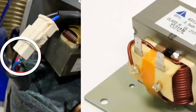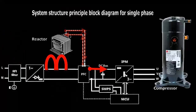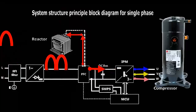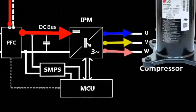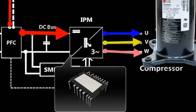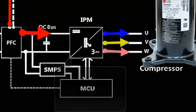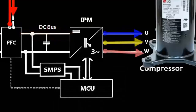Finally, to finish explaining the diagram, the stable current that comes out of the PFC circuit goes to the intelligent IPM circuit, or module, which is controlled by the main controller, and is responsible for feeding the three coils of the inverter compressor motor. In addition, the IPM electronic module is responsible for controlling the compressor speed, according to the signal from the main controller of the electronic board.